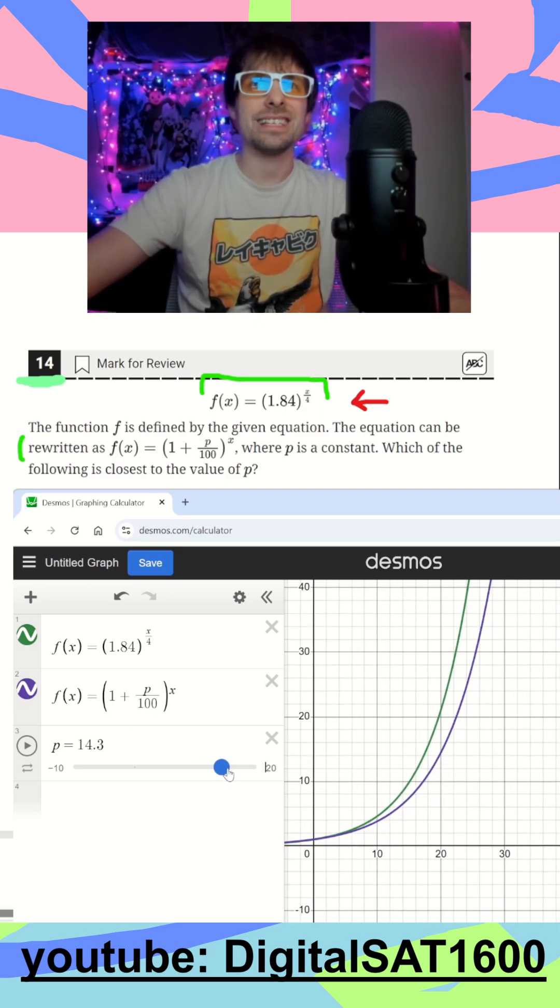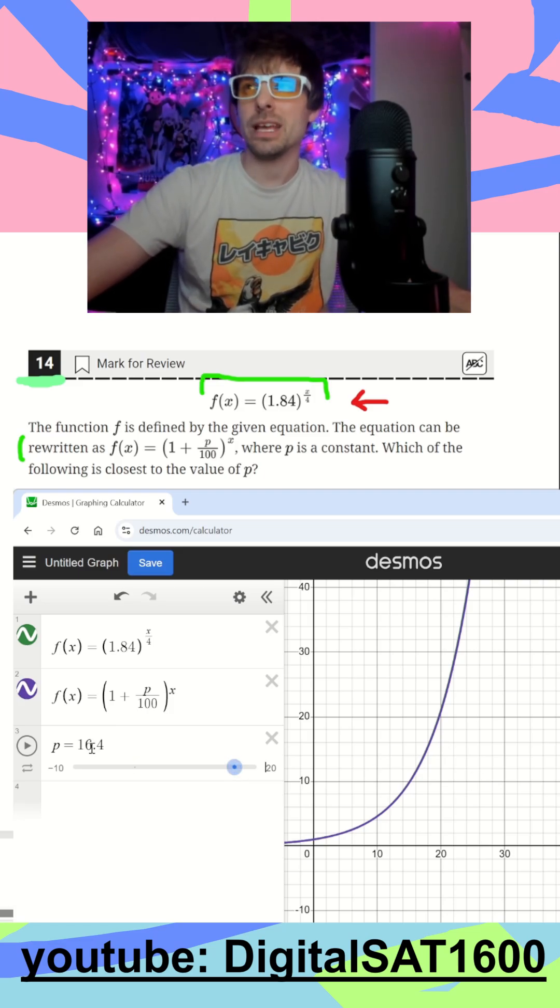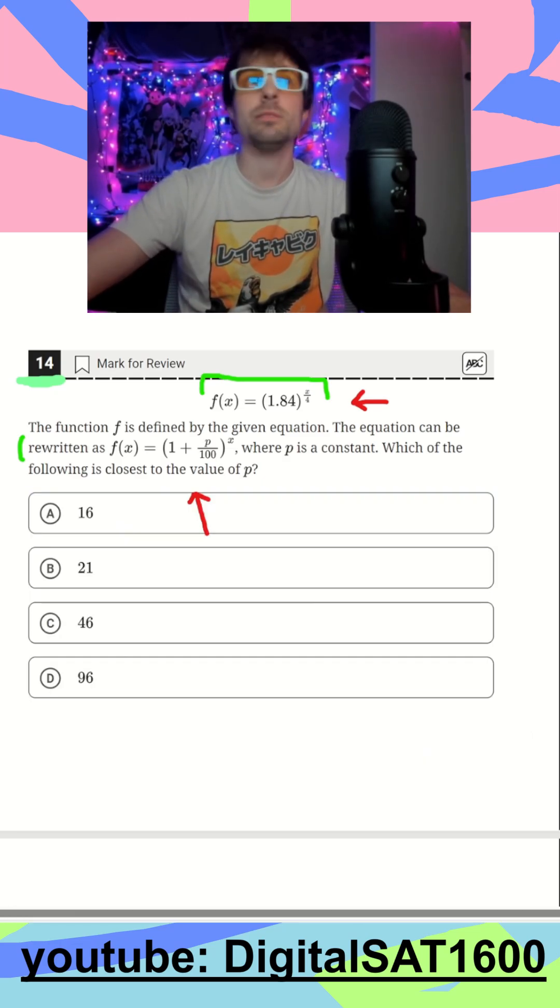So as I slide this, I can see very, very close to about 16.4. Again, this is one of the only ones it's going to be an estimate of. Usually you're going to get an exact integer here. So I hide our Desmos. Let's see if there's an answer close to 16.4, and it's just going to be 16 here. All you have to do.